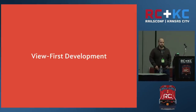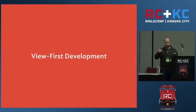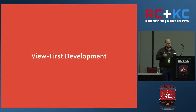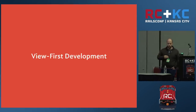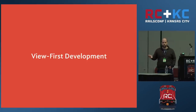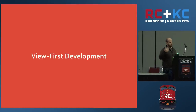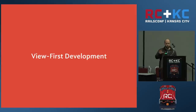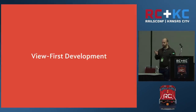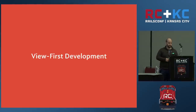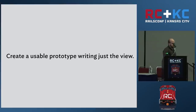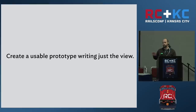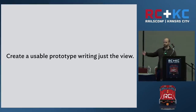Our priority with view-first development was to get something in front of project stakeholders that they could see and touch and use in a browser as early in the project as we could. When we started a project, we'd meet with stakeholders, determine what we're building, figure out the feature set, prioritize that, and start with the highest priority feature. The kinds of applications we build mostly involve user interfaces. That was the tangible thing we could play with together with stakeholders to talk about the more abstract conceptual details. We wanted to create a usable prototype building just the view — just write the HTML views and start there.